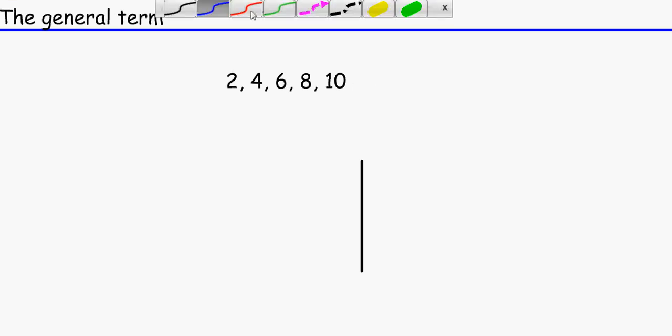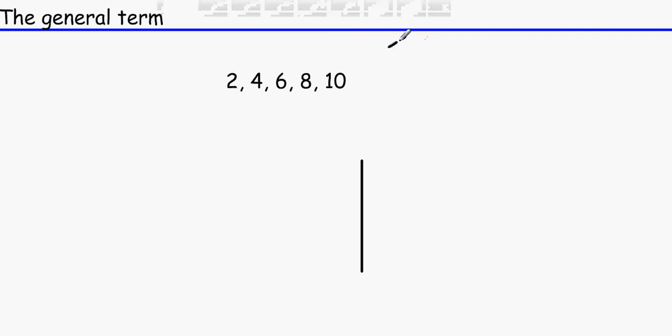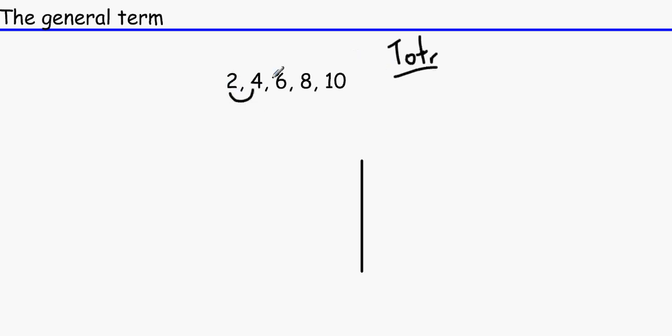The first thing — you've seen this all before. In Year 7 you might have remembered that you needed to find what the term-to-term rule is. I call it ToT — term-to-term rule, or Totar if you want to call it that. What you need to do is just find out how to get from one term to the next. And that rule here is to add two. So the term-to-term rule is to add two.